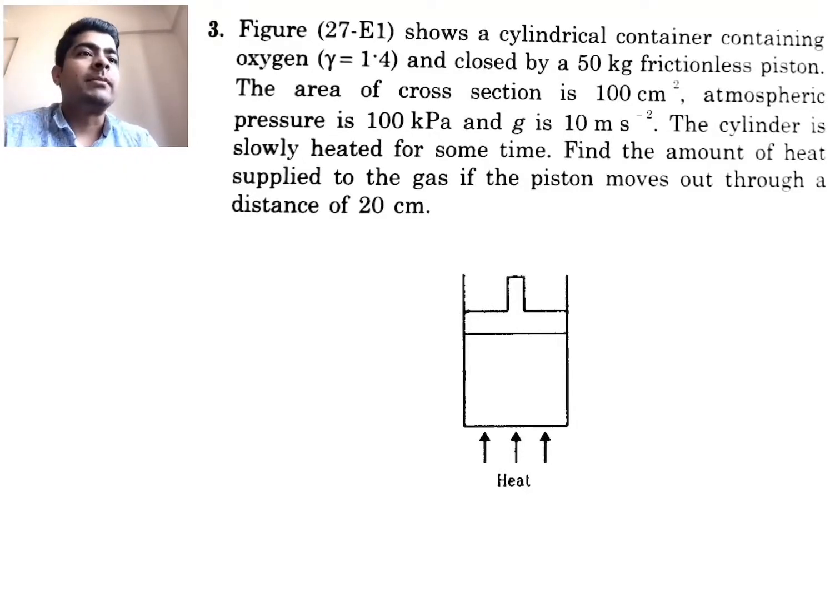We are looking at question number 3 from chapter number 27 of H.C. Verma. The chapter is about specific heat capacities of gases. The question says that the figure shows a cylindrical container containing oxygen enclosed by a 50 kilogram piston. So here is your cylinder, above the cylinder we have a piston, inside the cylinder we have oxygen.